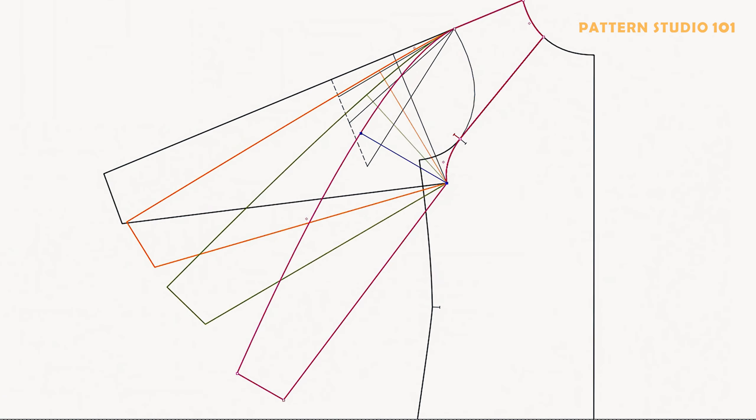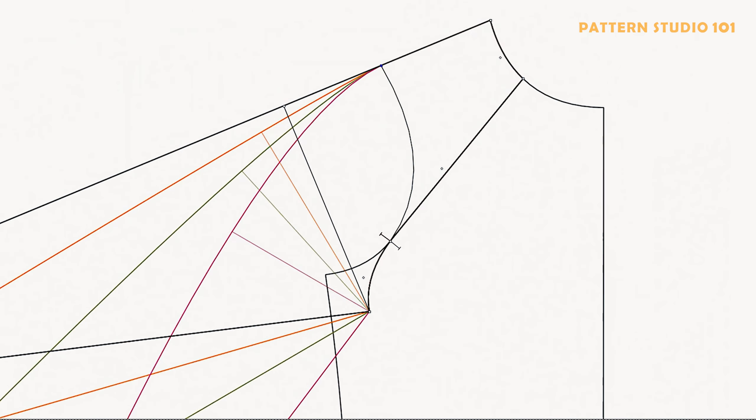Okay, we have four different sleeve angles. And I made them all different colors. We use the same body, which means the armhole depth is the same. Take a look at the sleeve cap height. Sleeve cap height is the distance between the bicep line to the shoulder point.